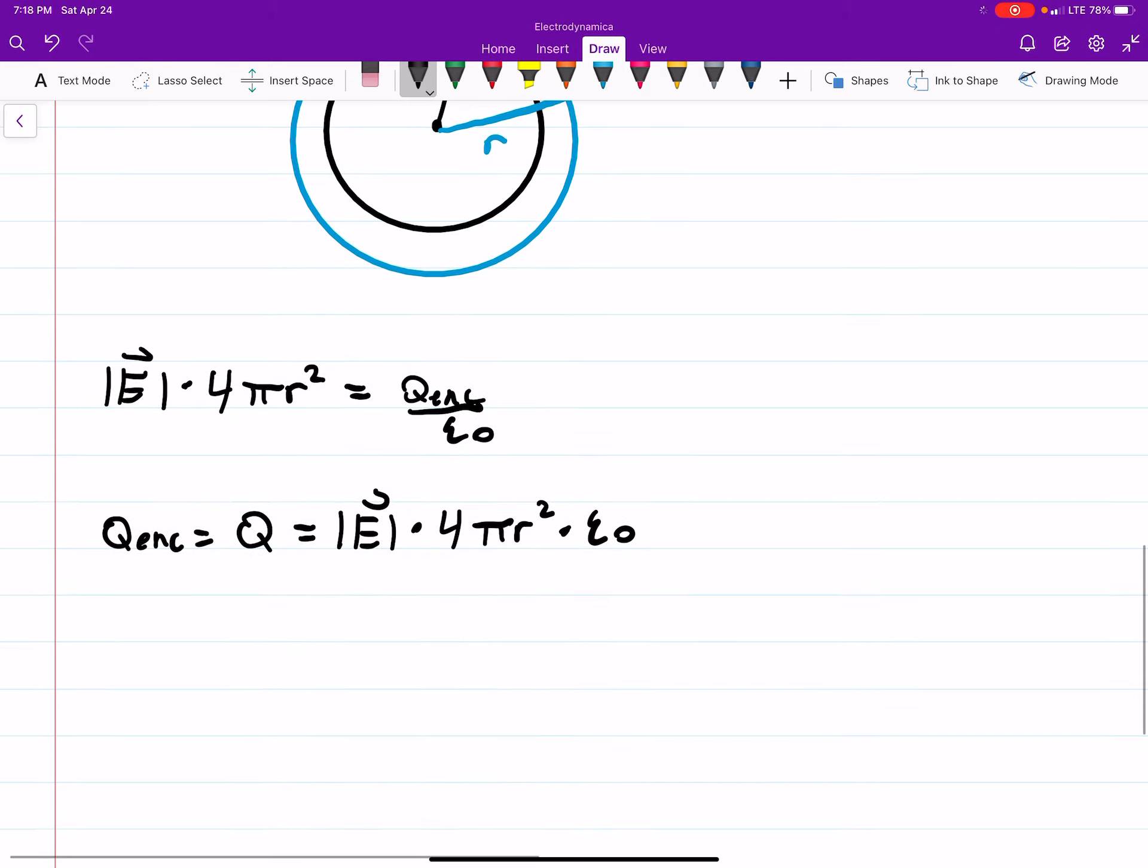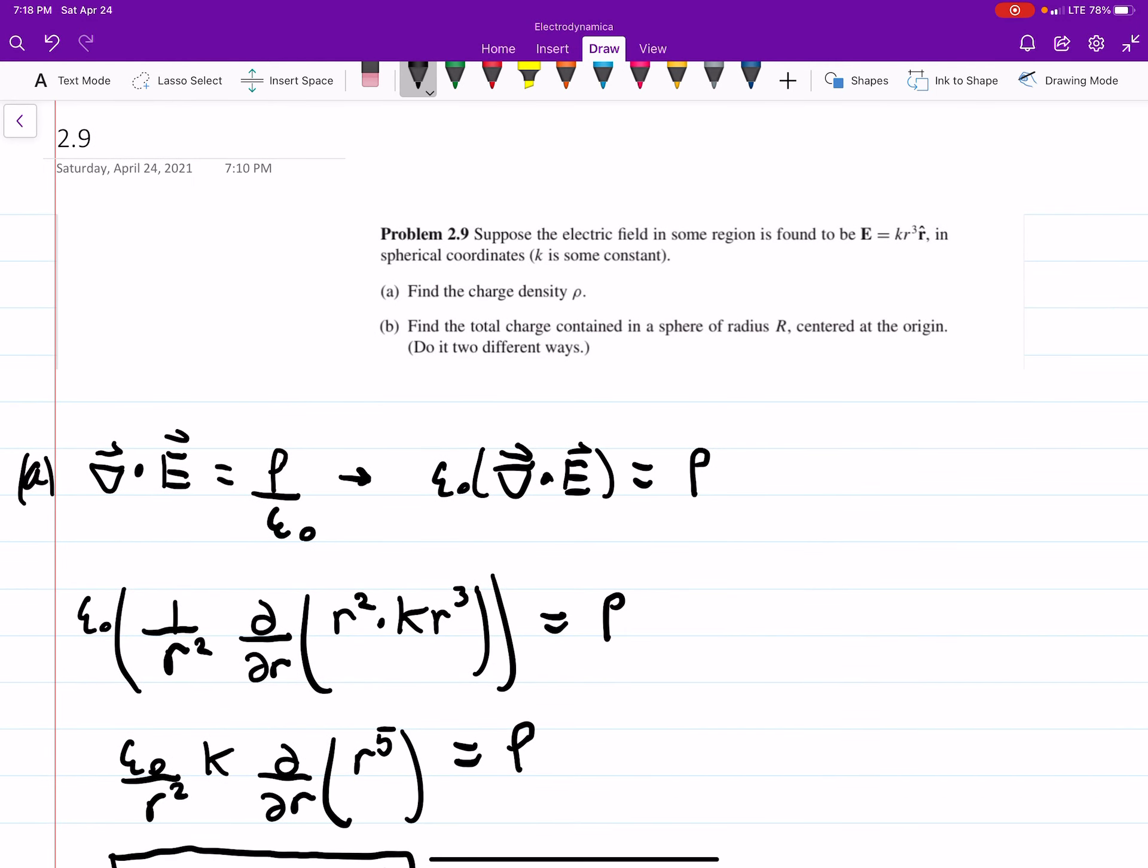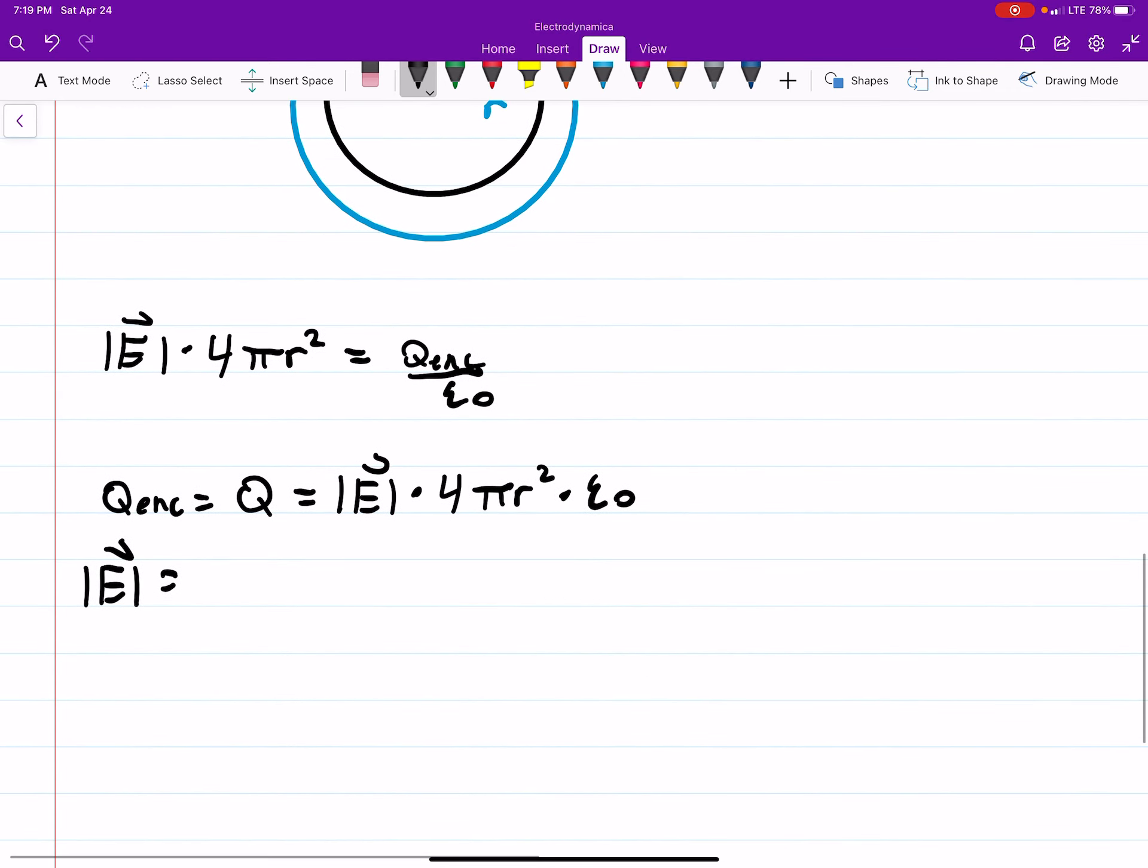But we know the magnitude of your E-field, that's given. It's kr cubed r hat. And since we're dealing with magnitude, we don't have to worry about the unit vector r hat, so it's just kr cubed. You can substitute this in here, and you can find that Q equals 4 pi, and then you're going to have your epsilon naught, k.